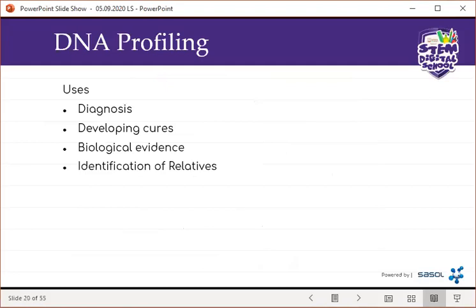The uses of DNA profiling include diagnosis. A DNA profile can be used to diagnose inherited diseases like cystic fibrosis, hemophilia, and sickle cell anemia. Diseases may be diagnosed in newborns and unborn children. Early detection of inherited diseases is important because it helps parents and medical staff to prepare themselves for proper treatment of the child.